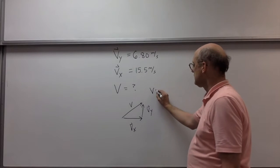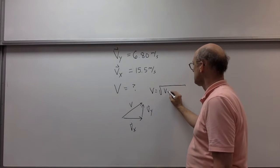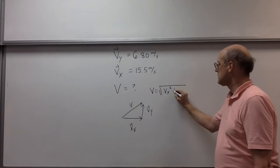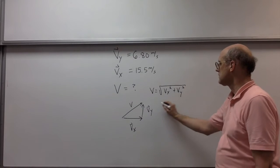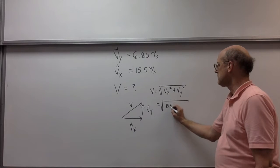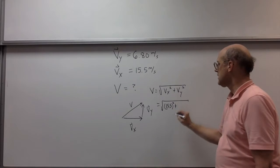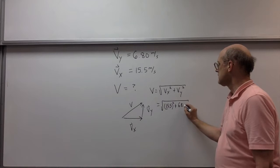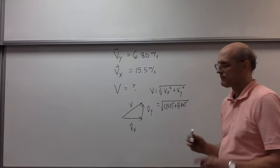So v is equal to the square root of vx squared plus vy squared. So we have the square root of 15.5 squared plus 6.8 squared.